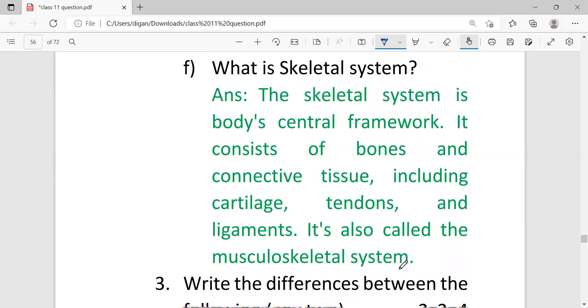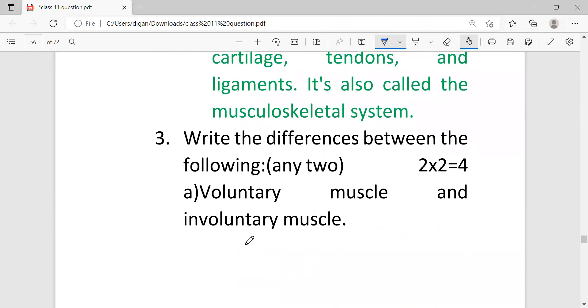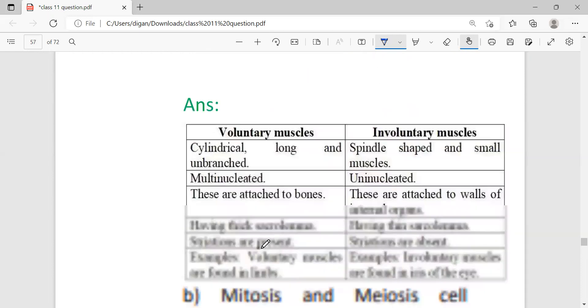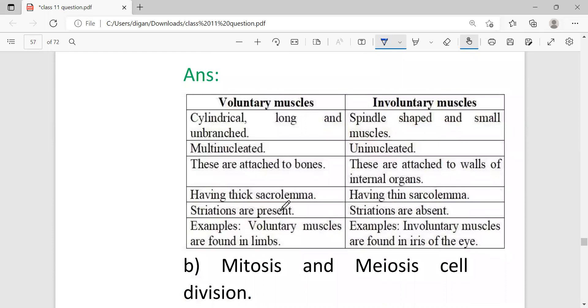Write the difference between the following, any two. Each carries two marks, total four marks. First one is voluntary muscle and involuntary muscle. Since this question carries only two marks, I'm giving the answer of four marks. If two marks come, just write three differences on each side. But sometimes this can carry four marks also, then you have to write at least four to five differences.